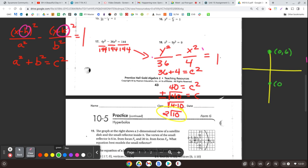So that means our vertices are going to be at 0, 6 and 0, negative 6. And then our foci will be at 0, 2 radical 10 and at 0, negative 2 radical 10. And then our box is going to look like this. There's our asymptotes. And the hyperbola will look like that.